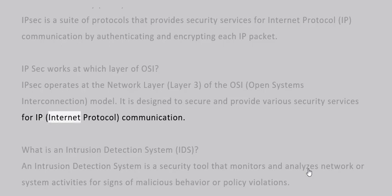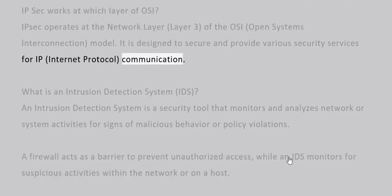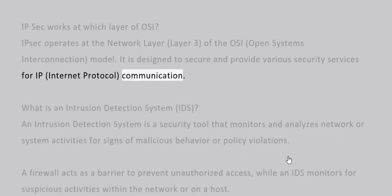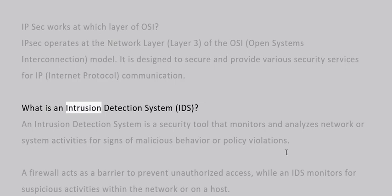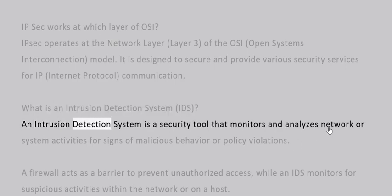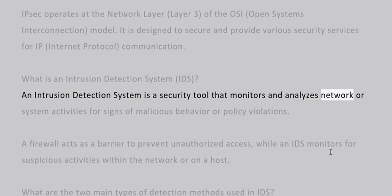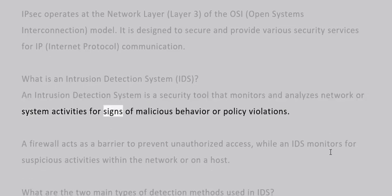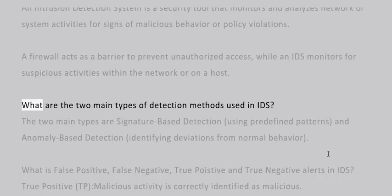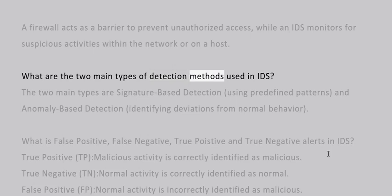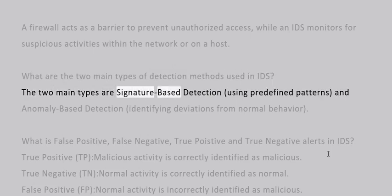What is an intrusion detection system (IDS)? An intrusion detection system is a security tool that monitors and analyzes network or system activities for signs of malicious behavior or policy violations. What are the two main types of detection methods used in IDS? The two main types are signature-based detection, using predefined patterns, and anomaly-based detection, identifying deviations from normal behavior.